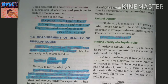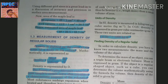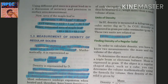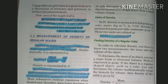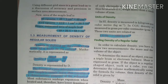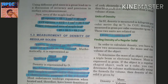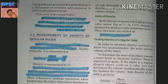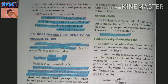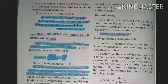We have covered measurements of density of regular solids in Part 1. Regular solids — squares, cubes — their density measurement. This is Part 2.